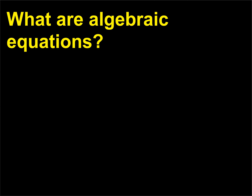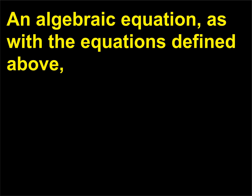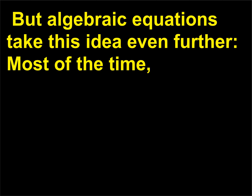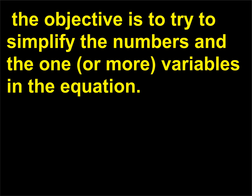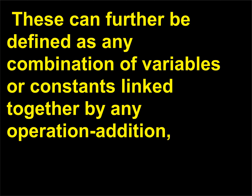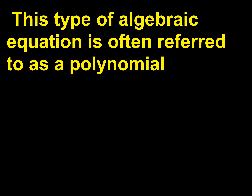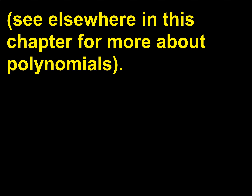What are algebraic equations? An algebraic equation, as with the equations defined above, is a statement in which two numbers, letters, or expressions are equal. But algebraic equations take this idea even further. The objective is to simplify the numbers and the one or more variables in the equation. These can further be defined as any combination of variables or constants linked together by any operation. This type of algebraic equation is often referred to as a polynomial.